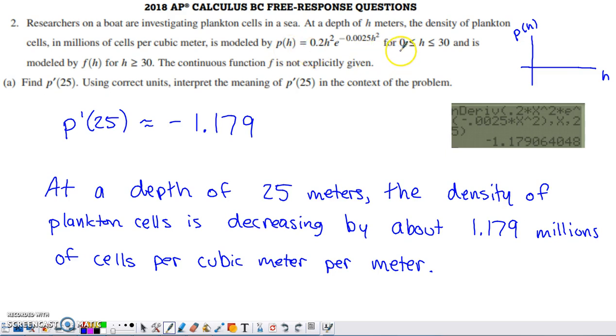This holds from the h value of 0 to the h value of 30, and it's modeled by something different, not specified, f of h, once h exceeds 30. We don't explicitly have access to that function f.